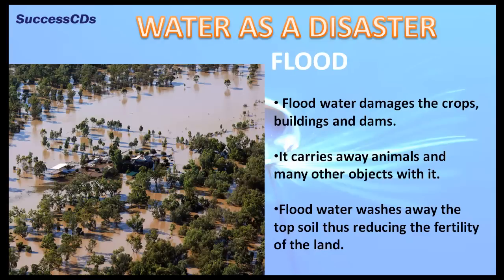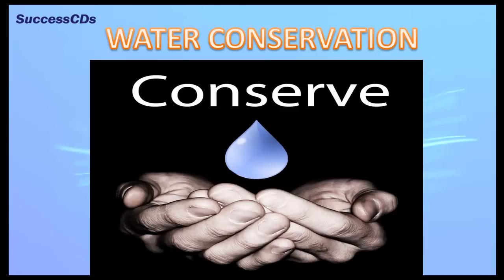Flood water damages crops, buildings, and dams. It carries away animals and many other objects with it. Flood water also washes away the topsoil, thus reducing the fertility of the land.